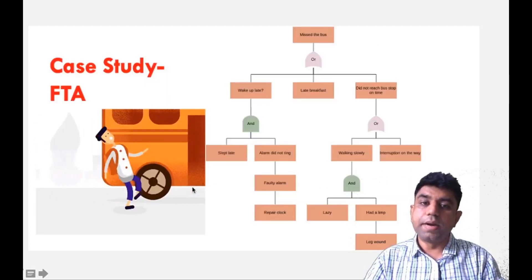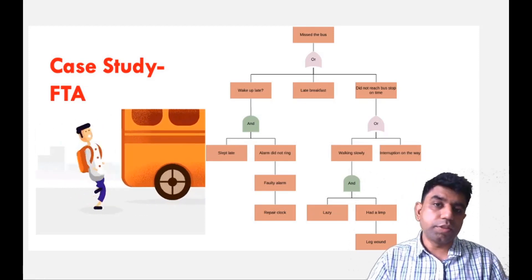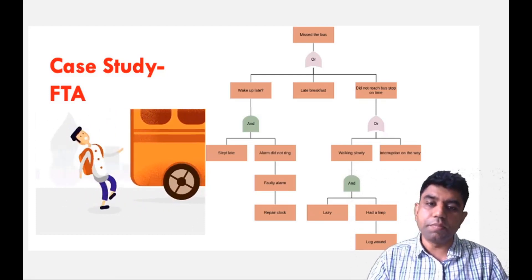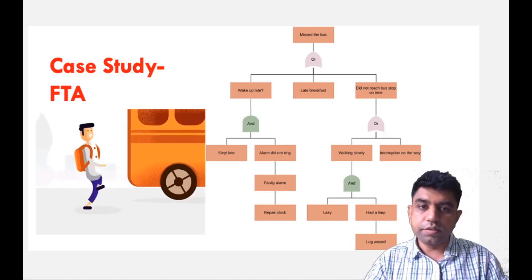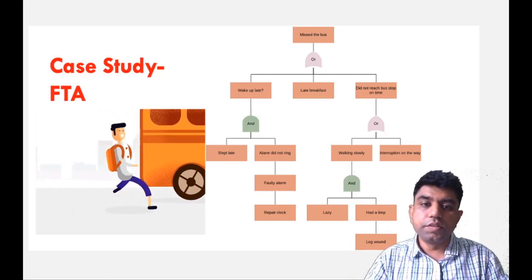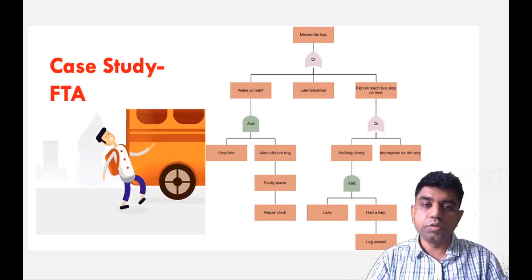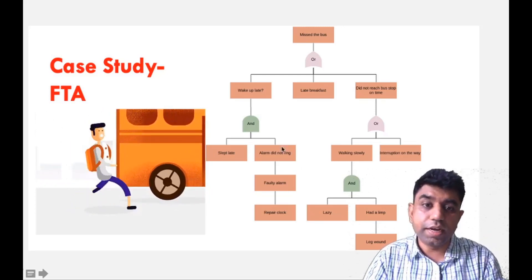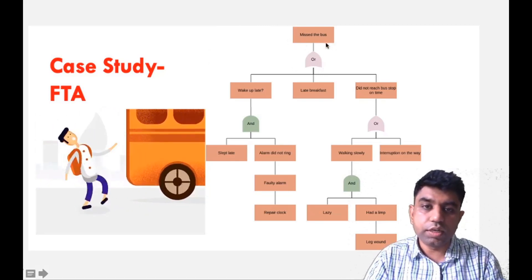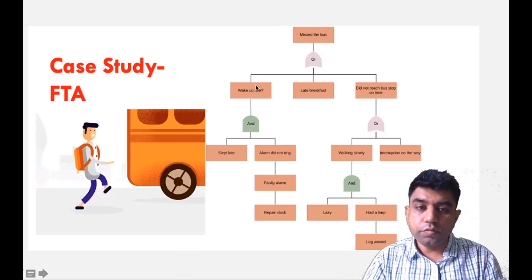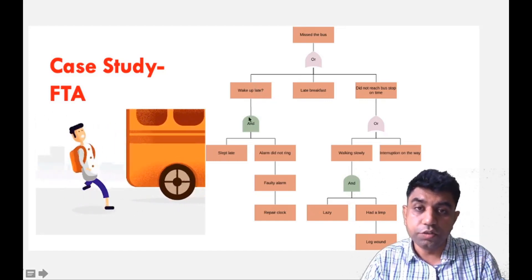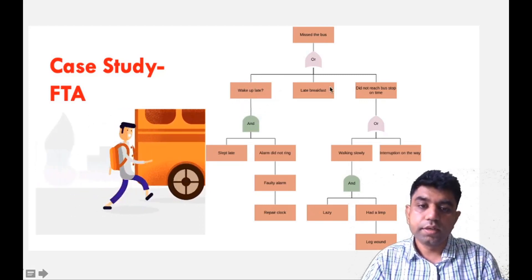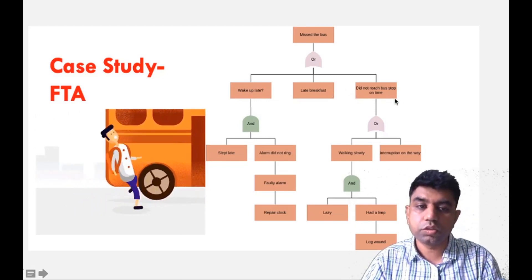To understand this better, let me take a case study. These are things we can directly correlate with our life. I'm taking the case study of missing the bus, because this incident might have happened with us at any point of time. So let us take the situation that you miss the bus — that is the event we are representing. We then indicate what the different reasons are due to which we miss the bus. The first is waking up late, maybe due to a late breakfast, or did not reach the bus stop on time — these are different OR possibilities.